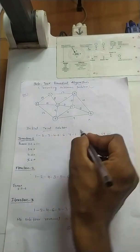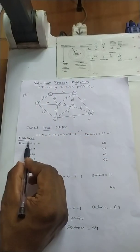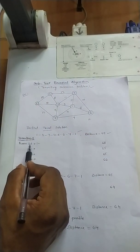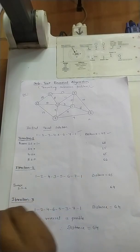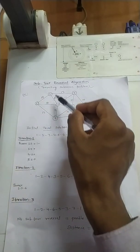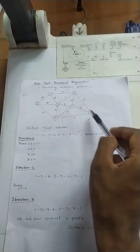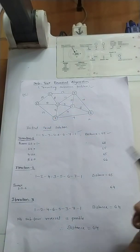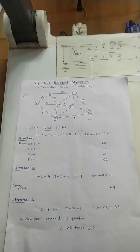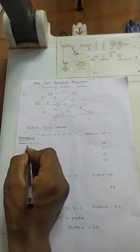Now in iteration 1, we will reverse sub-tours. We will not reverse the entire tour because if I reverse the entire tour, the path will be the same — 1, 7, 6, 5, 4, 3, 2, 1 is equivalent. So instead, we will reverse only part of the tour, that is a sub-tour.